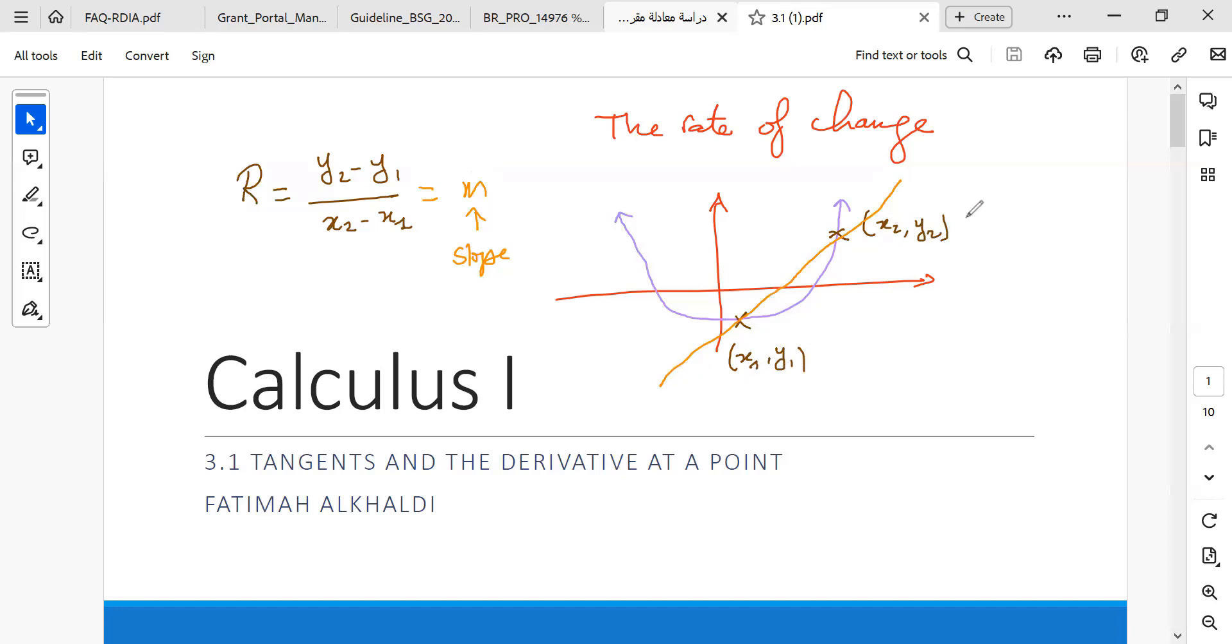Now imagine that we don't take any two points, but we choose two points close to each other. We will take points that get closer and closer on the graph. It will be X and Y at X, and the next one will be close, it will be X plus H, where H is small. I will show you what it means.